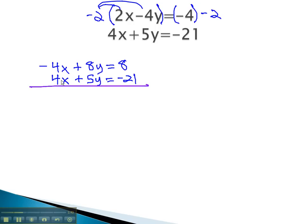We can now add those together, because the x's are opposites, and we'll subtract out, leaving just 13y equals negative 13. By dividing both sides by 13, we find out that y is equal to negative 1.